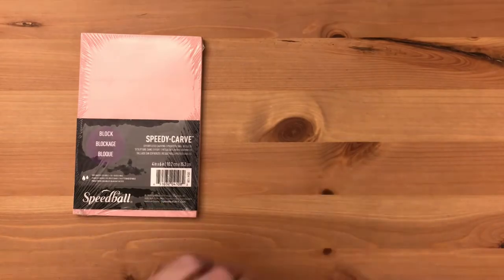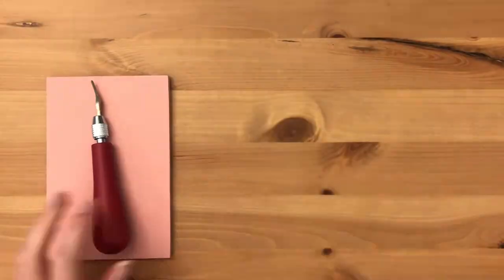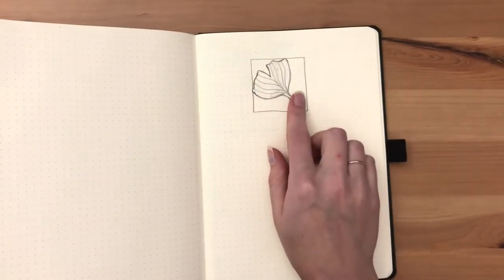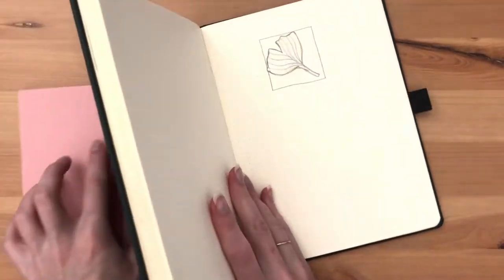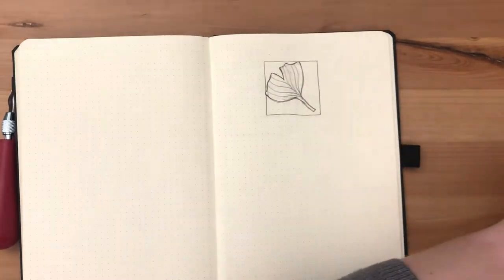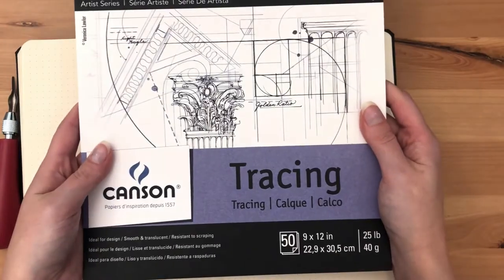First we need to start with a design for our stamp. I went with a ginkgo leaf because they are super pretty and cool. I started by sketching it out inside a box that was how big I wanted the stamp.